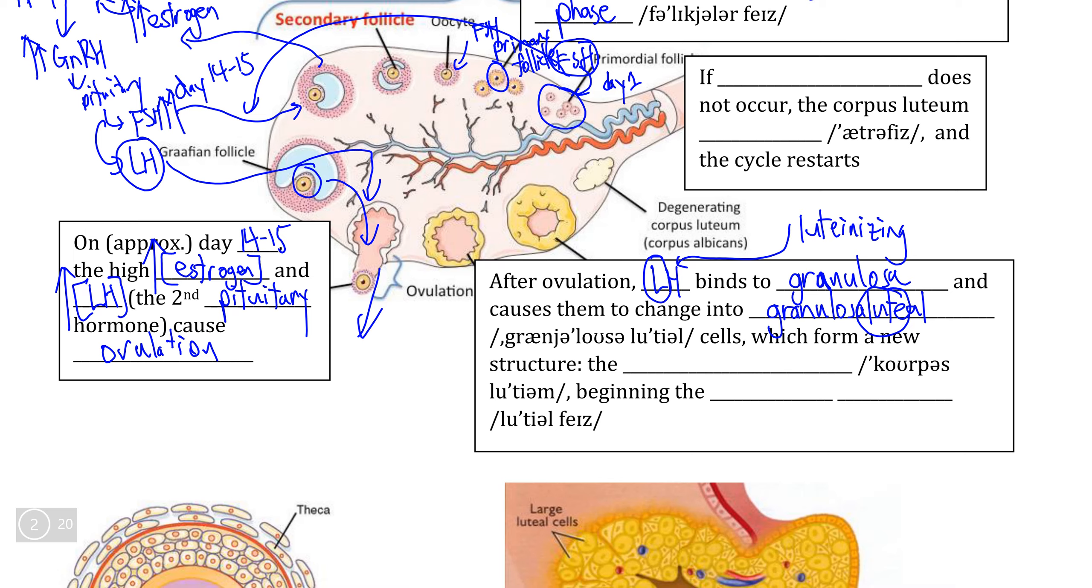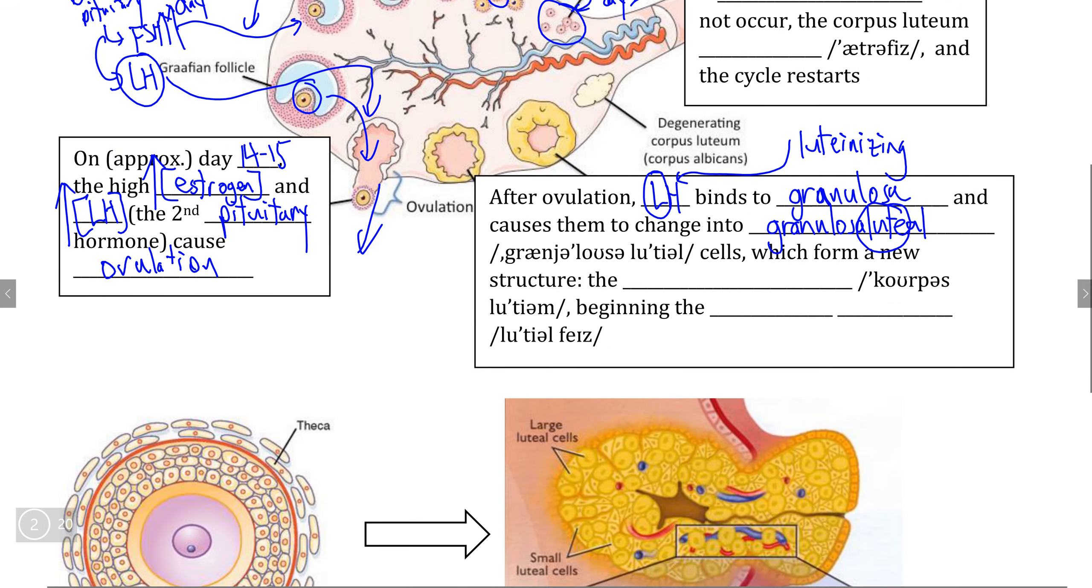Granulosa luteal cells come together and form a completely different structure that is distinct from the separate granulosa cells and form a new hormone-producing gland, which is what we call the corpus luteum. Corpus is just a fancy word that means body. So in this case, it means luteum body. For the latter half of the ovarian cycle,